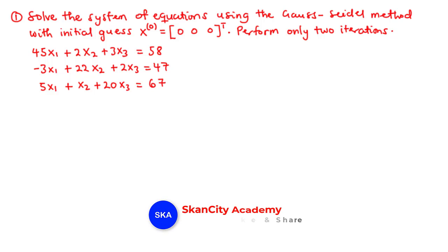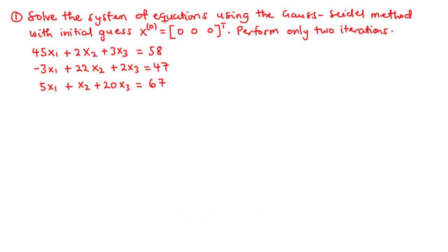We are going to continue our lesson on linear iteration methods, and specifically in this lesson we are going to discuss the Gauss-Seidel iteration method, which is basically an improvisation of the Jacobi iteration method we stated in the previous lessons. We choose the Gauss-Seidel iteration method over the Jacobi iteration method simply because of the convergence speed.